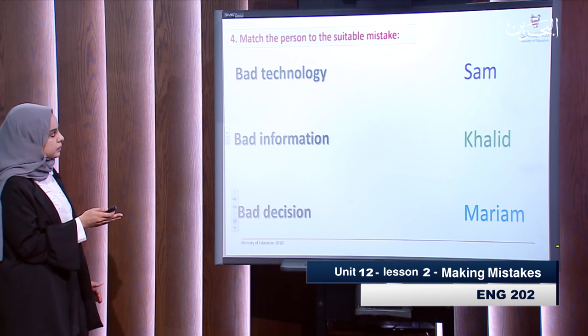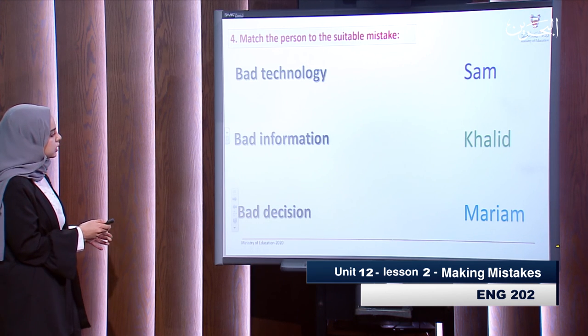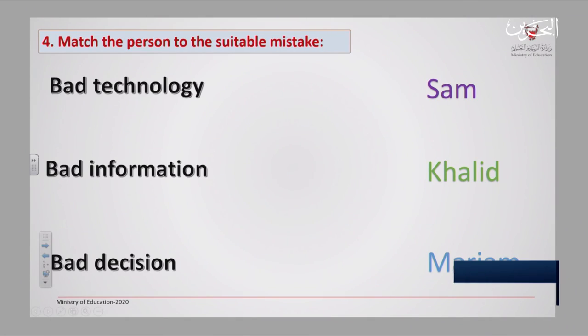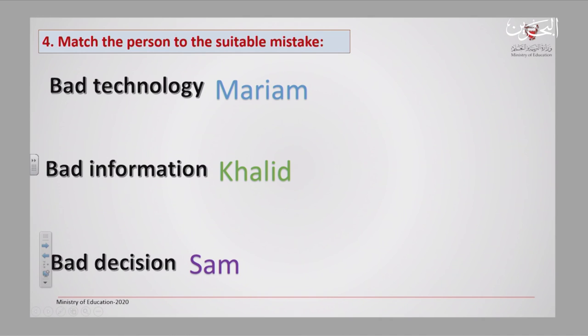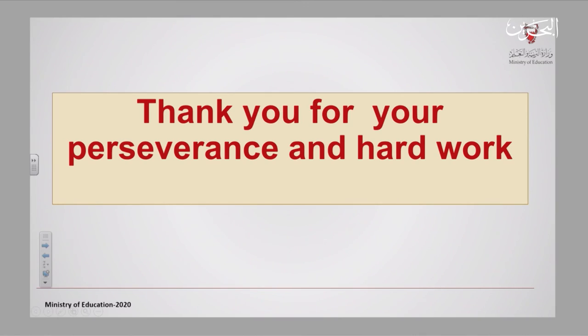Now, Sam, Khaled, and Maryam — what kind of mistakes did they make? We have: bad technology, bad information, and bad decision. Let us try to match. Sam's mistake was a bad decision. Khaled's was bad information. And Maryam's was bad technology. Thank you for your attention, and see you soon.